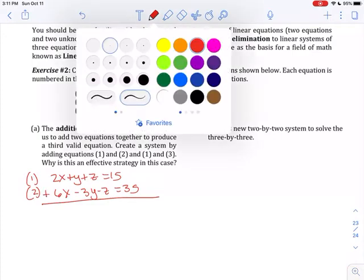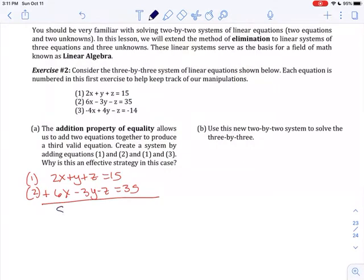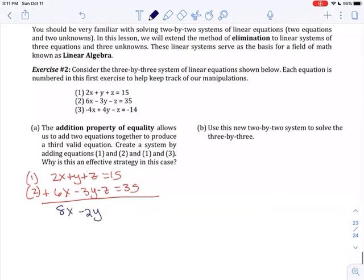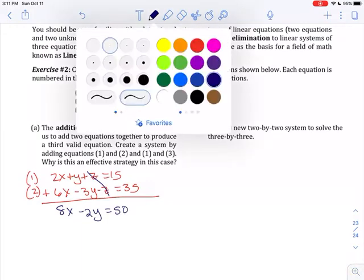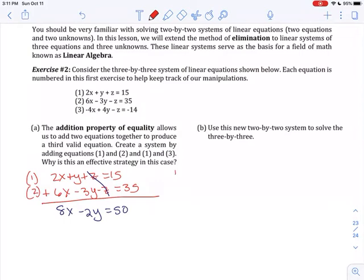Now look at those z's. Those z's can very easily drop out if I was to add these equations together. So I'm going to add them together and I'm going to get 8x - 2y, the z's cancel out, equal 50.